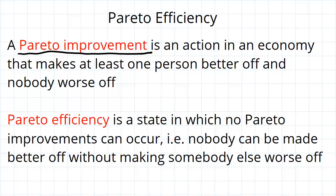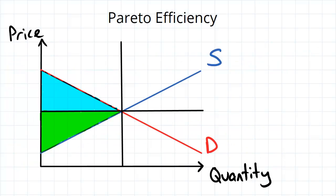Pareto efficiency is a state in which no more Pareto improvements can occur. As long as we're in a situation where the only way you can improve somebody's situation is to make somebody worse off, we have Pareto efficiency. Now, we've shown in a previous video that market equilibrium is economically efficient — the definition for economically efficient was that producer surplus and consumer surplus combined were maximized. We've got consumer surplus represented by the blue triangle here underneath the demand curve, and producer surplus as well.